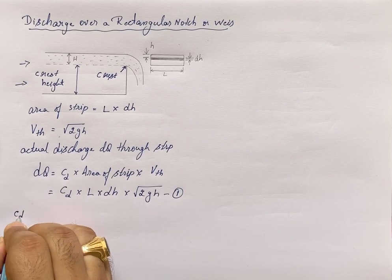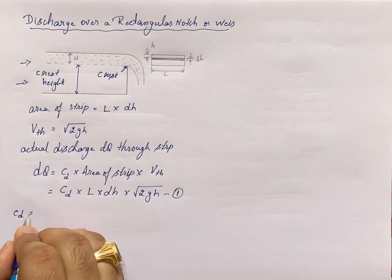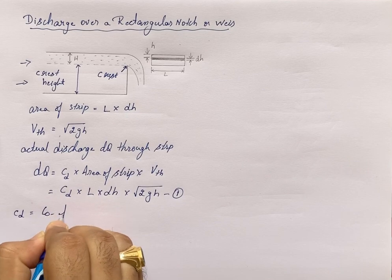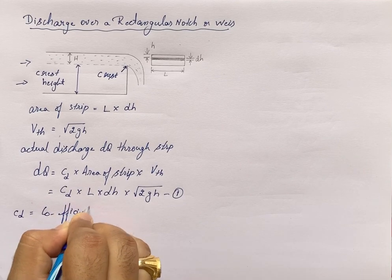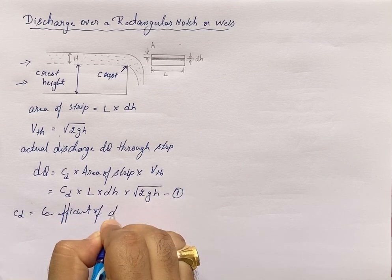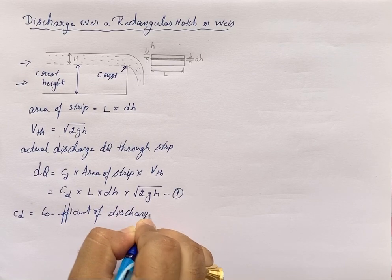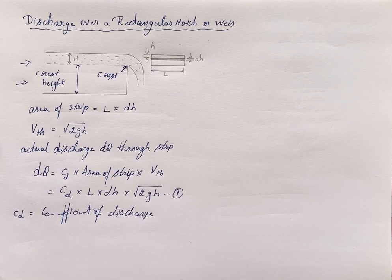What is Cd? Cd is the coefficient of discharge.